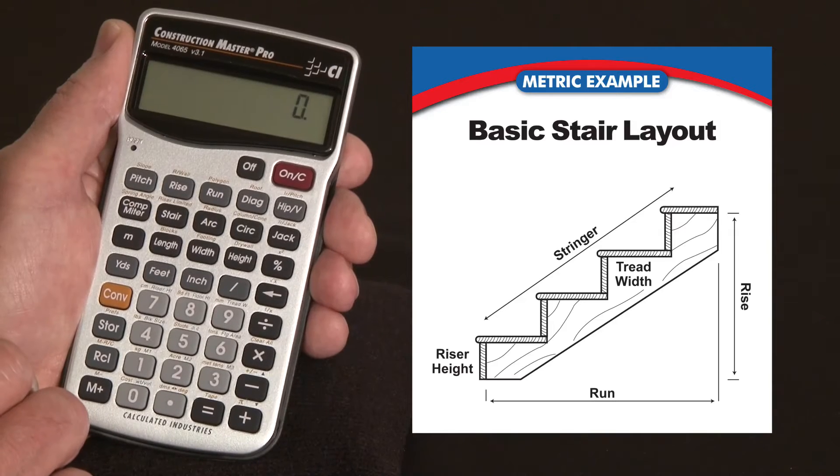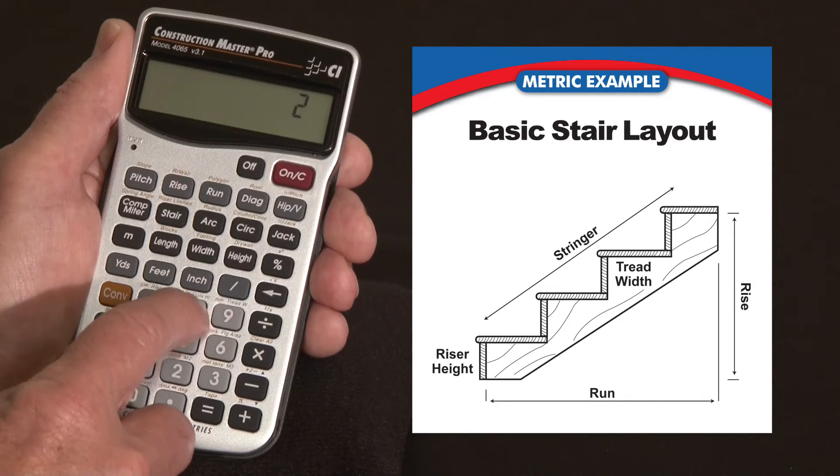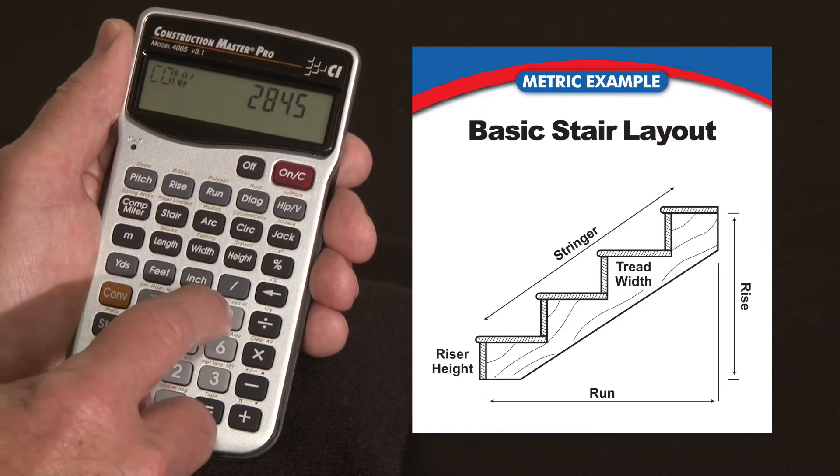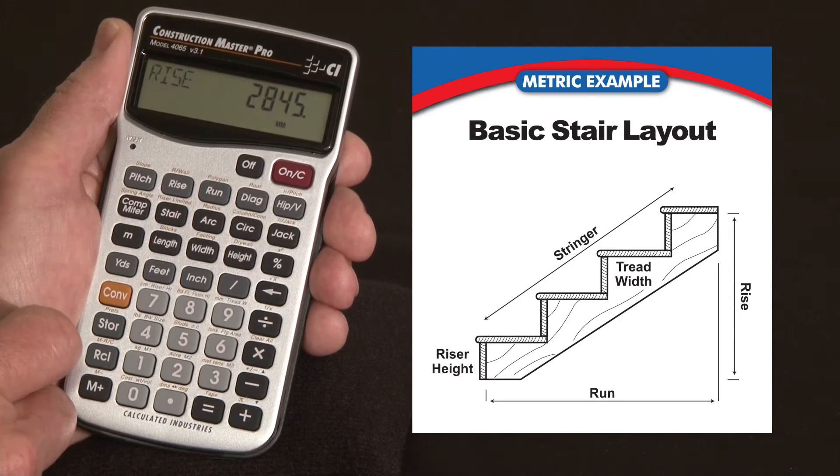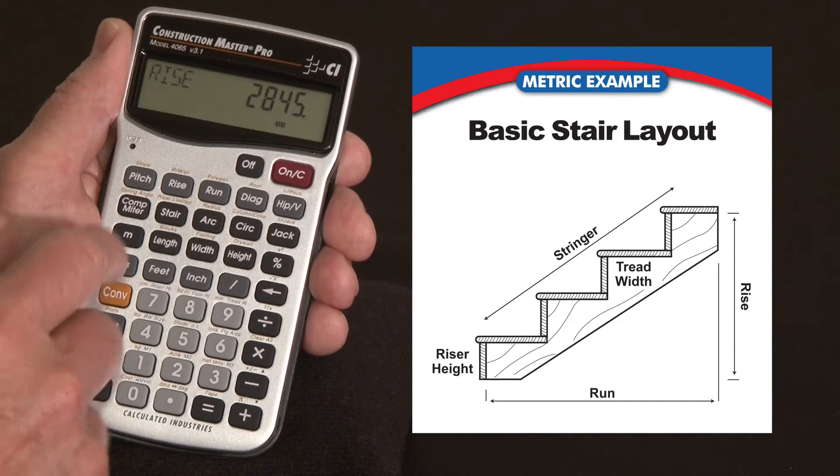And you ordinarily start with a floor-to-floor rise. So say you've got 2845mm, and convert to 9 for millimeters, and I'm going to enter that as my rise. So now the stair function is all set to give us a series of answers that we need.